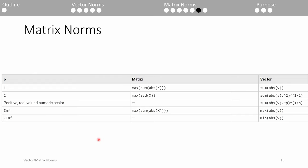Here's a list of some common p-values you can use in the norm function along with its formula in MATLAB syntax. This table was actually taken directly from the MATLAB documentation. As usual, I encourage you to thoroughly read the documentation for the norm function.